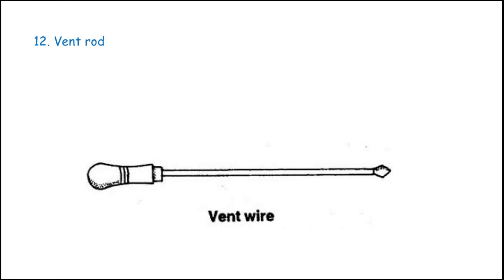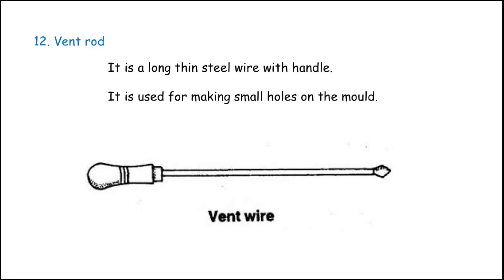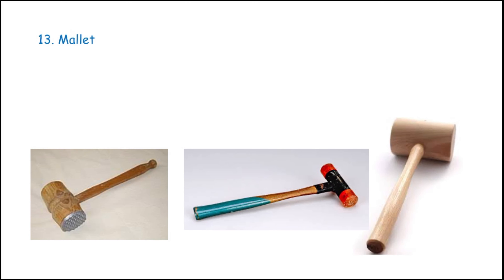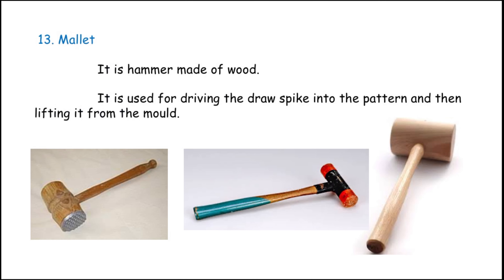The next one is the vent rod. It is a long thin steel wire with a handle, used for making small vent holes in the mold — these holes are called vents. The final one is the mallet, which is a hammer made of wood, and sometimes plastic or aluminum. It is used for driving the draw spike into the pattern and then lifting it from the mold.